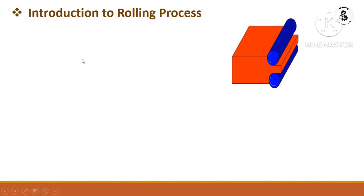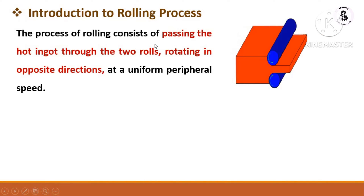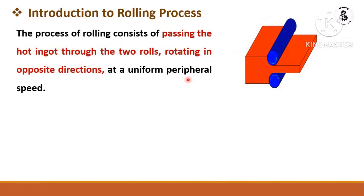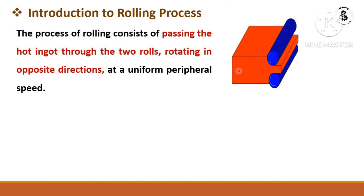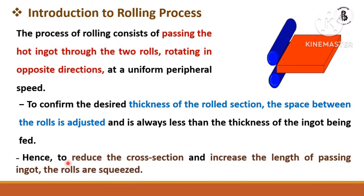You can see here the basic rolling process. The hot ingot passes through two rollers that move opposite to each other at uniform speed, allowing reduction of the cross-sectional area. The rolling process increases the length of the workpiece material and reduces the cross-sectional area. To achieve the desired thickness, the space between the rollers is adjusted — the lower roller is fixed and the upper roller is movable.